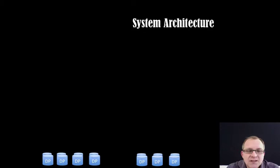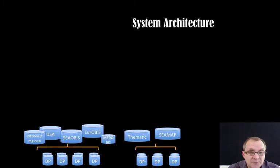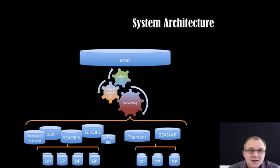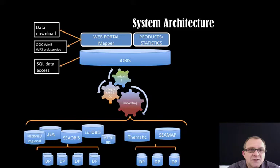So how does OBIS work? We have 500 data providers connected to a bit more than 20 OBIS nodes, which collect the data from data providers and do some quality control and data processing. One of those regional OBIS nodes is the Asian Center for Biodiversity, being responsible for Southeast Asia, or SeaOBIS. The international OBIS then harvests those OBIS nodes, does the integration and QC and indexing, and provides that integrated information through its web portal, building products and statistics, and provides access to the data through web services, data download, and SQL data access.